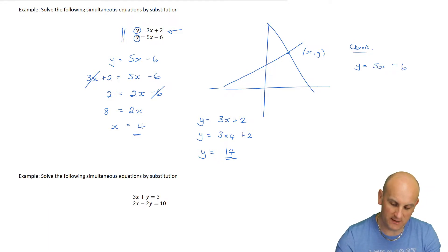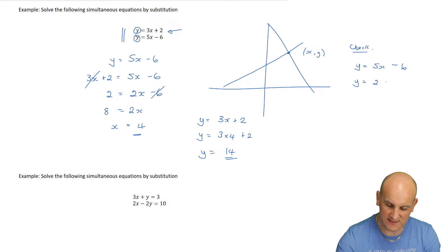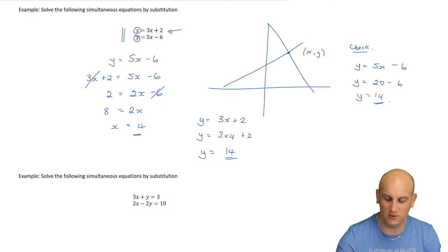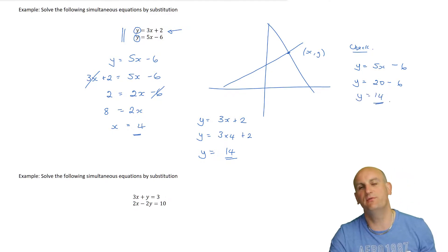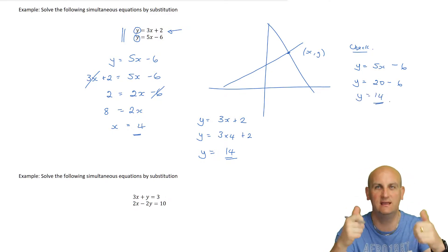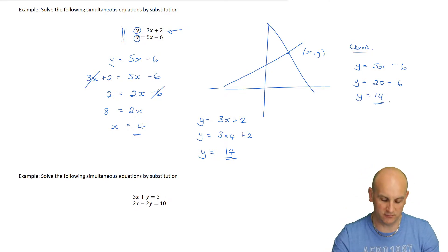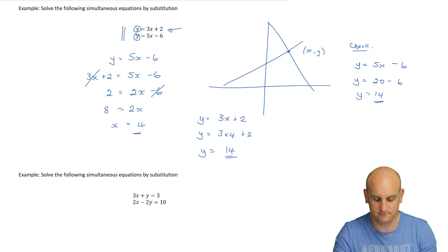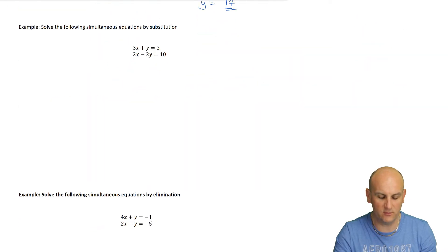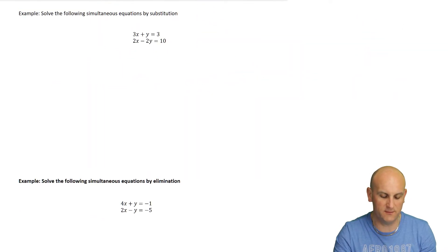When I was back in school with good old Mr. White, he would make sure we checked with the second equation. Y equals 5 times 4, which is 20 minus 6 - y equals 14. Do they both equal the same thing? They do. I've got it correct.